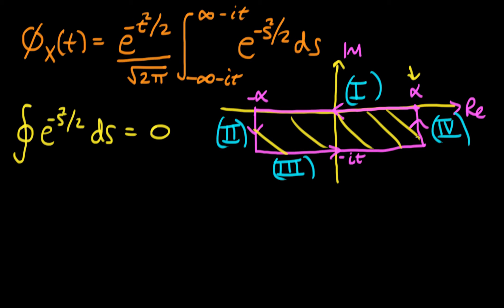For all values of the imaginary and real parts of s in this region, e^(−s²/2) can be expanded as a power series — there are no singular points within this region. This is a result from complex analysis, and if you don't know that, it's probably best to look through some introductory text on complex analysis.